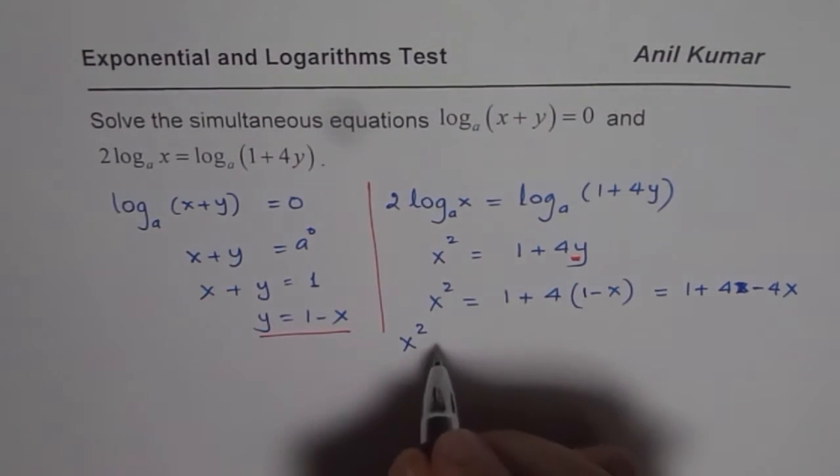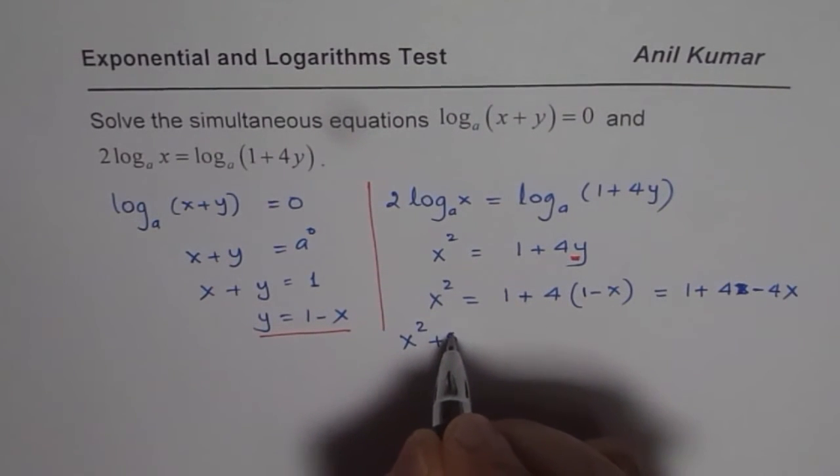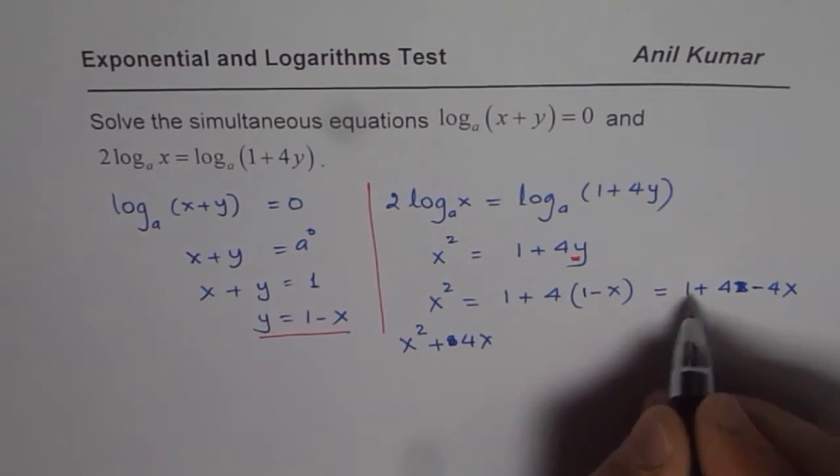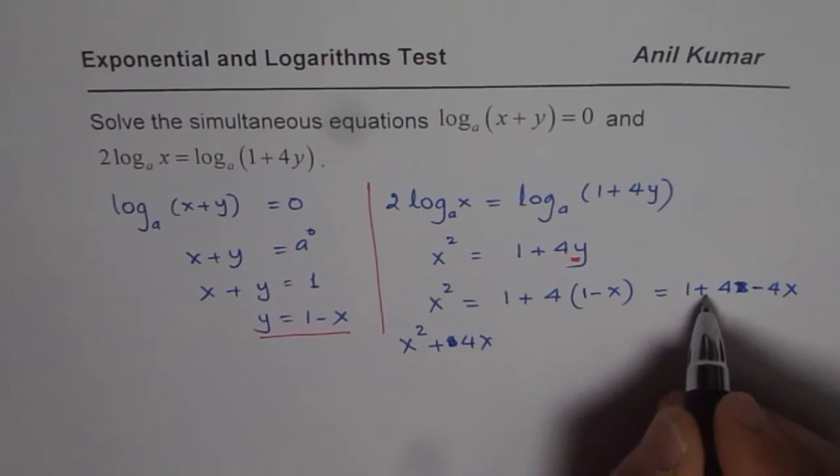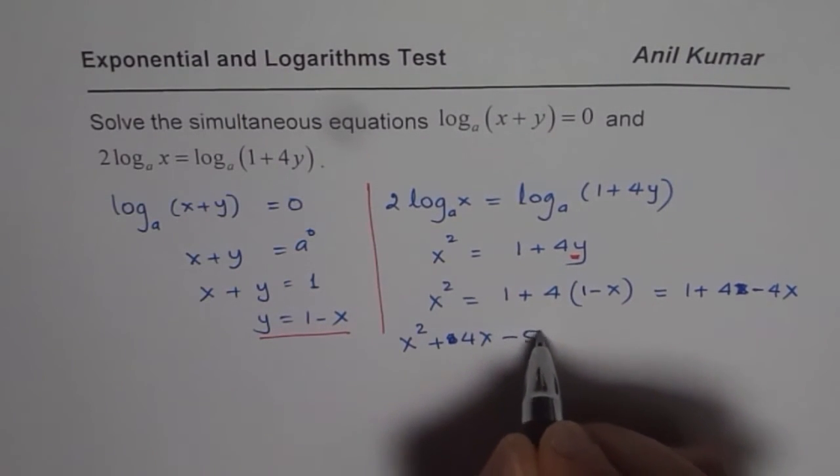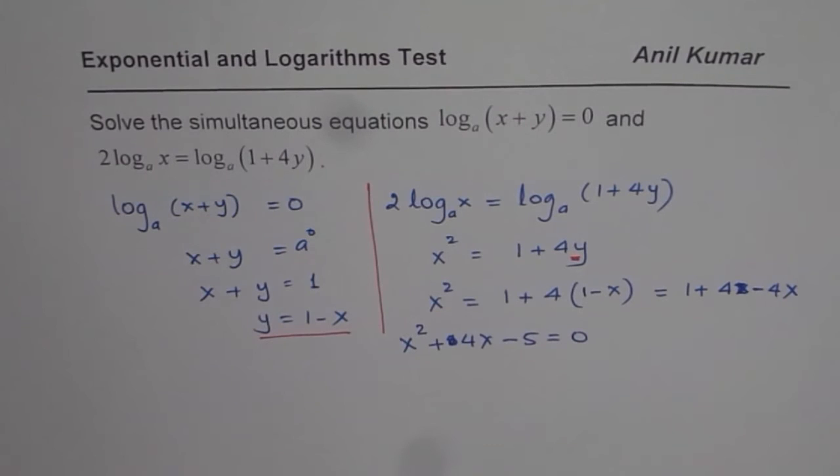Now let us bring these terms to one side. We have x squared minus 4x becomes plus 4x, minus 4 plus 1 is 5, so we will bring this also here. So minus 5 equals 0. So we get our quadratic equation: x squared plus 4x minus 5.